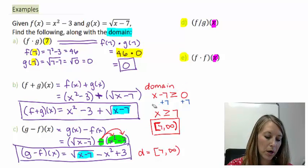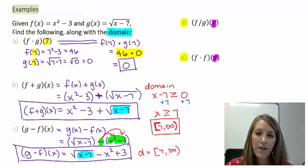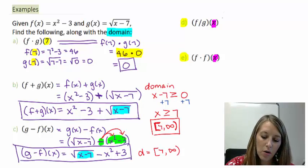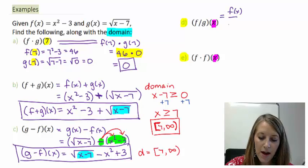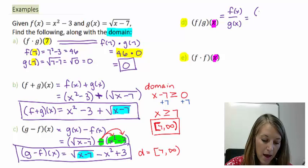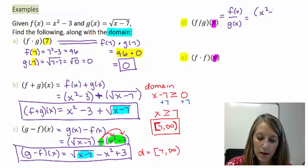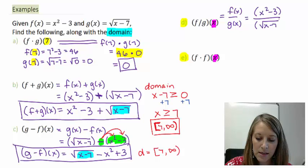Part D. F divided by g of x. So that gives me f of x divided by g of x. So on the top, I have x squared minus 3 divided by, on the bottom, square root of x minus 7.